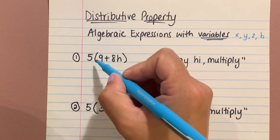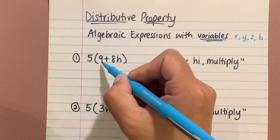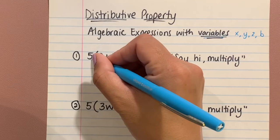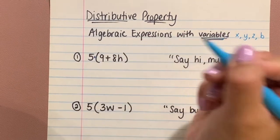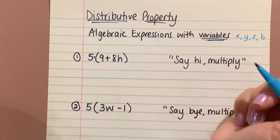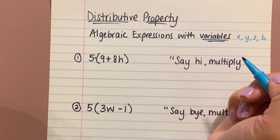it says five times the sum of nine and eight H. If you notice, I said times here. There is no multiplication symbol there, but that's just because it's next to the parentheses. You don't need to put the multiplication symbol.